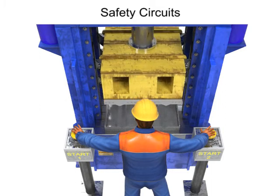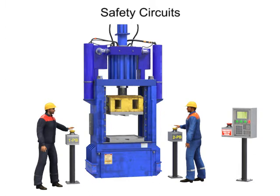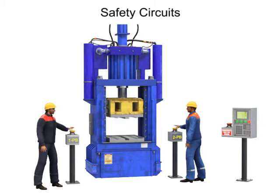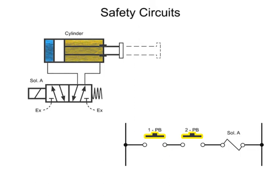Two-hand controls can also describe a machine that requires two separate operators typically located on opposite sides of the machine. Both operators must be in place to allow the machine to start its cycle. For this type of machine, two-hand operation controls typically consist of two push buttons wired in series.